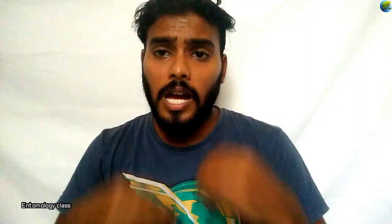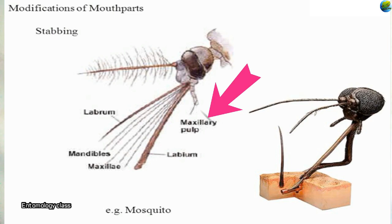After piercing, the hypopharynx secretes saliva into the host tissue, which keeps the blood flowing through the food canal formed by the epipharynx. The mandible and maxilla act as the piercing organ with a needle-like structure at the terminal area. In the hemipteroid type the maxillary palp is completely absent, but in the case of mosquitoes the maxillary palp growth is visible.